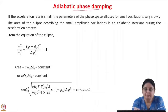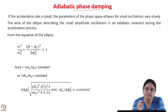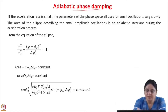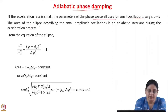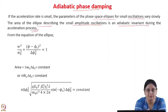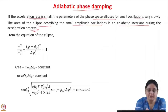Let us see adiabatic phase damping in the longitudinal phase space. If the acceleration rate is very small, beta and gamma can be taken as almost constant — they are varying very slowly. The parameters of the phase space ellipse for small oscillations vary slowly. The area of the ellipse describing small amplitude oscillations is then an adiabatic invariant during the acceleration process. This applies only when the acceleration rate is small.